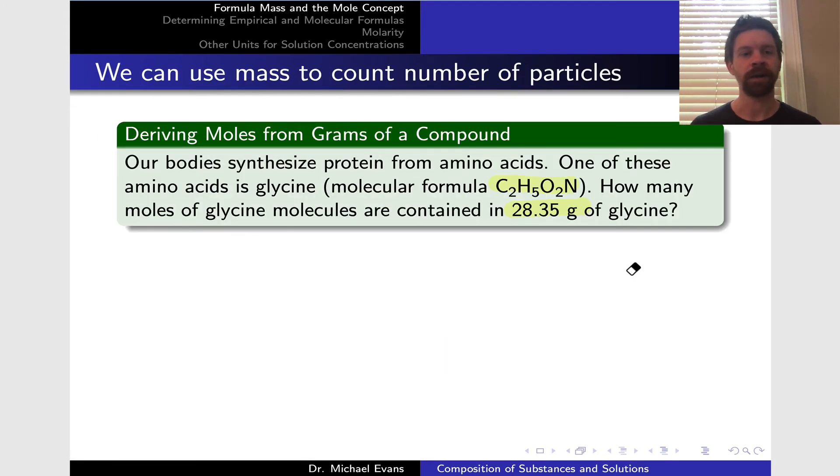Let's look at an example of how we can apply molar mass to determine the number of moles of a compound based on a given mass. Here's an example: our bodies synthesize proteins from amino acids, and one of the amino acids is glycine with molecular formula C2H5O2N. How many moles of glycine are contained in a sample of 28.35 grams of this compound? First, draw a picture of the situation. We're looking at a lump of the compound that weighs 28.35 grams.